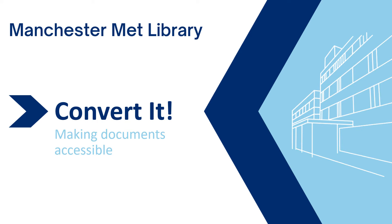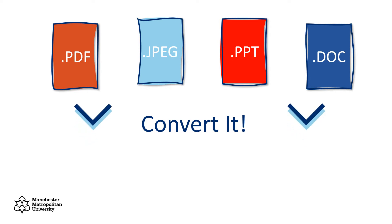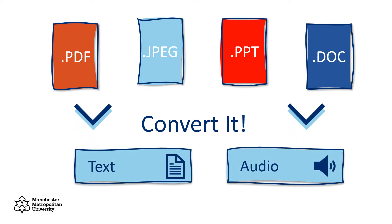Welcome to this video by Manchester Met Library on how to use our Convertit service. The Convertit service allows you to convert image-based PDFs, JPEGs, PowerPoint presentations, and Word documents into a text or audio file to make them more accessible to you.